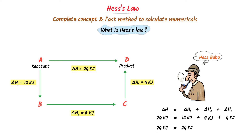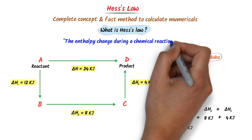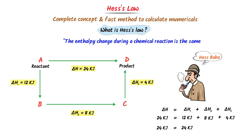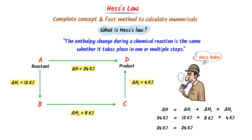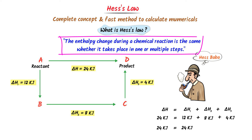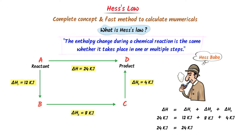Therefore, Hess's Law states that enthalpy change during a chemical reaction is the same, whether it takes place in one or more than one steps. This is statement number one of Hess's Law.